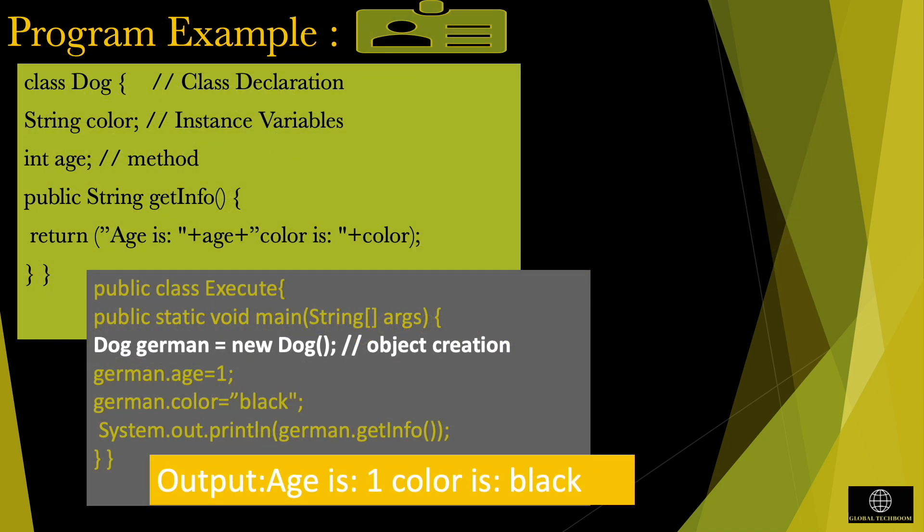In this example, we have two separate classes written and define main method in another class. By creating dog object in main class, it is assigning values. Java class is an entity that determines how Java objects will behave and what objects will contain. A Java object is a self-contained component which consists of methods and properties to make certain type of data useful.